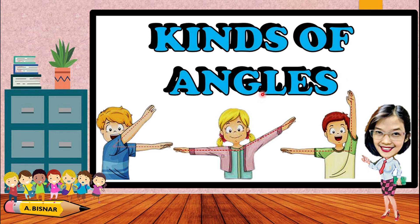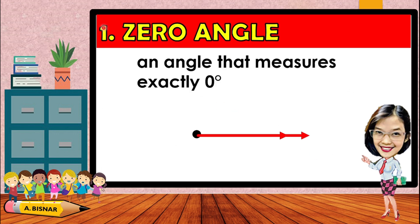Now let us study the kinds of angles. From this illustration, different kinds of angles are formed. The first one is the zero angle — it is an angle that measures exactly zero degrees. As you can see, there is no opening; both rays lie on the same side, so its measurement is zero degrees.